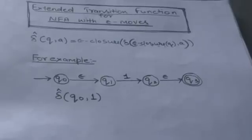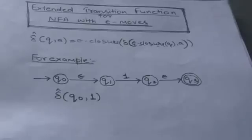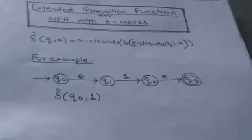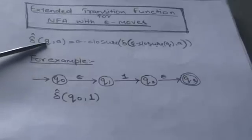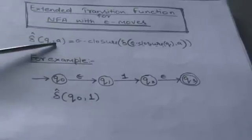In the previous automata we studied — NFA without empty moves and DFA — the extended transition function for a single input symbol behaved as a normal transition function. But in this case, the extended transition function for NFA with empty moves behaves differently. Let's see how it behaves.